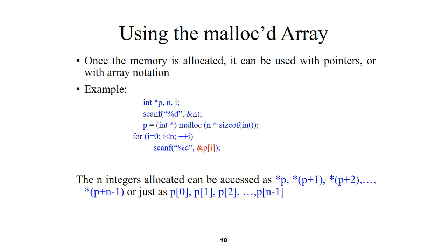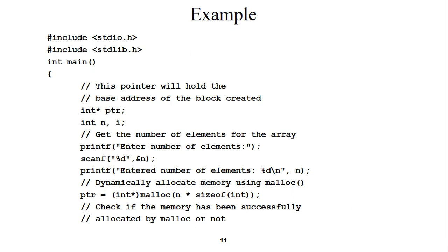In this example we have three variables of integer type while one is a pointer. We are taking input from the user using scanf with %d and ampersand — it means we are going to take input from the user. %d is the format specifier. Now let us discuss this in detail with the help of the program.